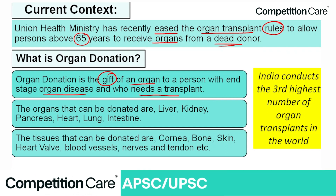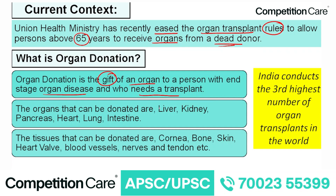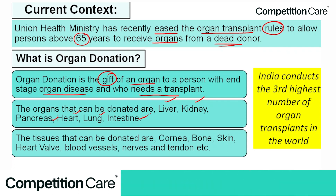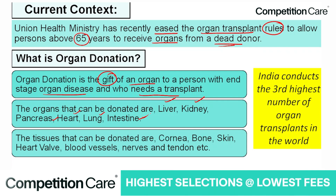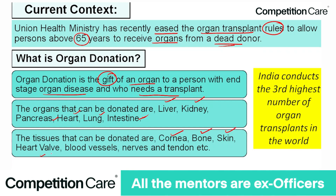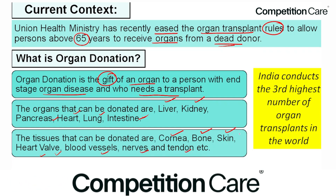The organs that can be donated include liver, kidney, pancreas, heart, lung, and intestine. The tissues that can be donated include cornea, bone, skin, heart valve, blood vessels, nerves, and tendons.